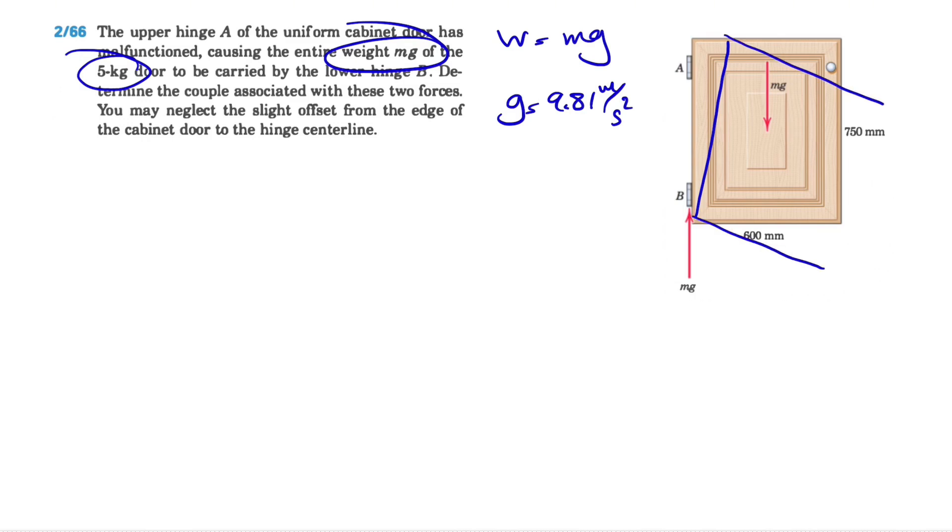And the reason is that for finding the couple, let's go over to the definition of couple before we get into this note at the end of this question. The moment that is produced by two forces that are equal - which we know they are both mg - they are in the opposite direction.